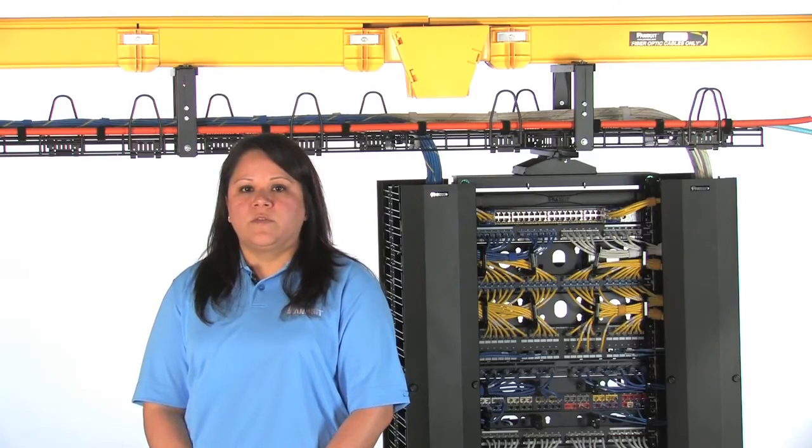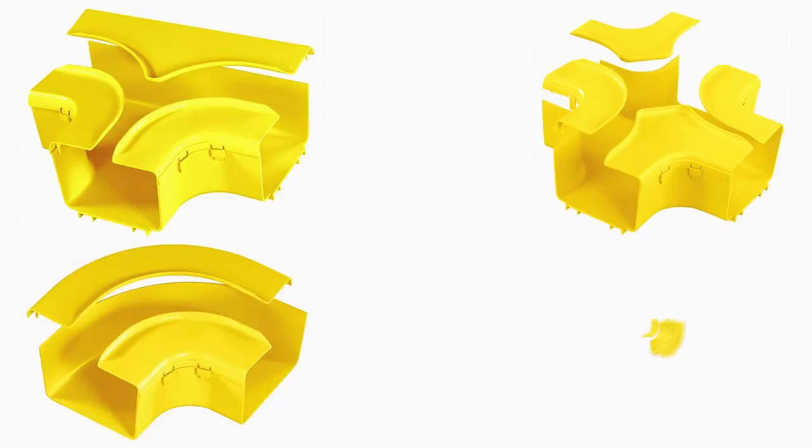The FiberRunner system also includes a variety of directional fittings, such as tees, crosses, right angles, and inside and outside corners.